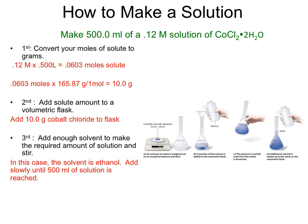It is important to learn how to make a solution properly. There are certain steps that need to be followed, and there is an order in which we add the solute to the solvent. The first thing you have to do is do the math. For example, we're going to make 500 milliliters of a 0.12 molar solution of cobalt chloride dihydrate. Using molarity equals moles over volume, we solve for moles: 0.12 molarity times 0.500 liters gives us 0.0603 moles of solute. Multiplying by its molar mass of 165.87 grams tells us we need 10 grams of solute.